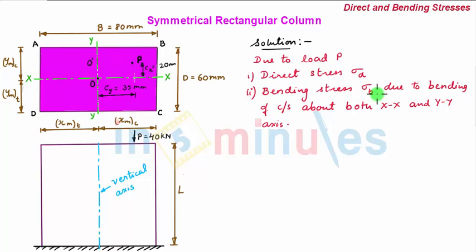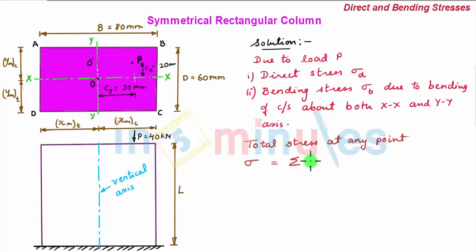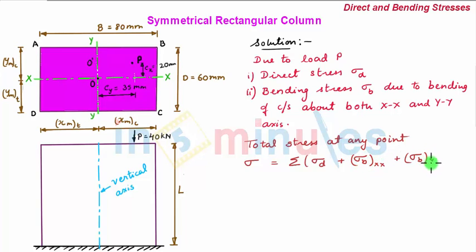Since the bending stresses are maximum at the extreme layers, we consider the four extreme points of the cross-section: A, B, C, and D. The total stress at any point will be given as the algebraic sum of direct stress plus bending stress about xx-axis plus bending stress about yy-axis.